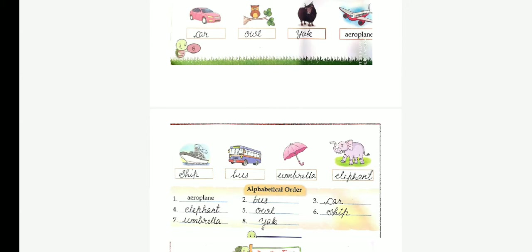Then, write it in alphabetical order. Which word will come first? Aeroplane. Next, bus. Next word, car. Fourth one, elephant. Fifth one, owl. Sixth one, ship. Next, umbrella. And last word, yak.